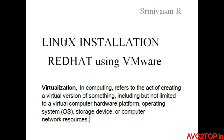Hi everyone, we are going to see how to install a Linux operating system. We are going to use Red Hat RHEL 6 version using VMware and install it virtually. Virtualization is the act of creating a virtual version of something — we are not going to use any physical hardware directly, but making use of physical hardware through software, and you can use it across different applications.